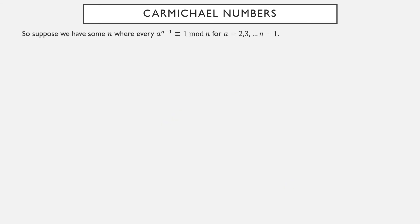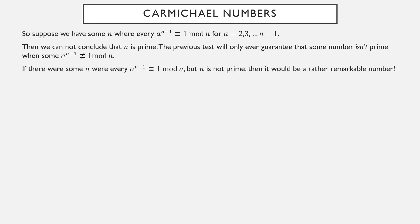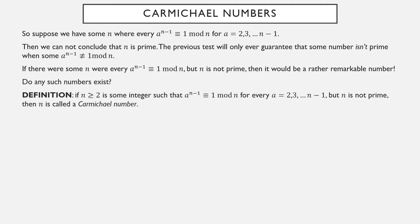Suppose there's some number where all of these things are equivalent to 1 mod n - 2 to the n minus 1, 3 to the n minus 1, 4 to the n minus 1, all the way up to n minus 1 to the n minus 1 are all equivalent to 1 mod n. You don't necessarily conclude n is prime, you've simply failed to show that it isn't. If there is some n where all of these are equivalent to 1, but it's still not a prime number, that would be pretty remarkable. Is it even possible?